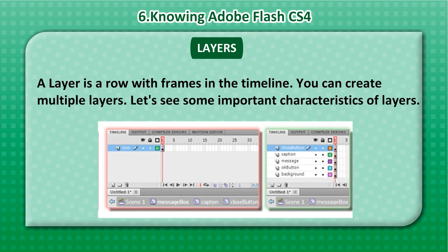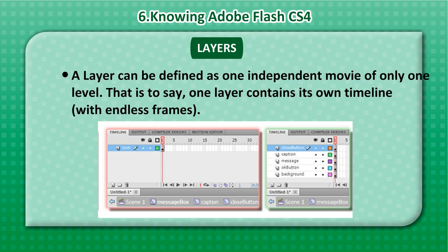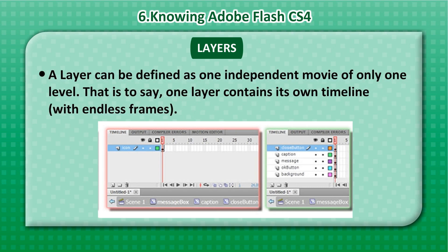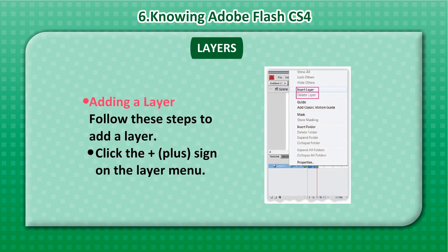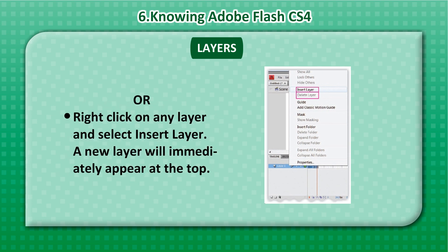Layers: A layer is a row with frames in the timeline, and you can create multiple layers. A layer can be defined as one independent movie of only one level — that is, one layer contains its own timeline with endless frames. To add a layer, click the plus sign or the layer menu, or right-click on any layer and select Insert Layer. A new layer will immediately appear at the top.